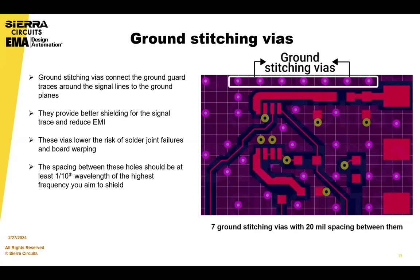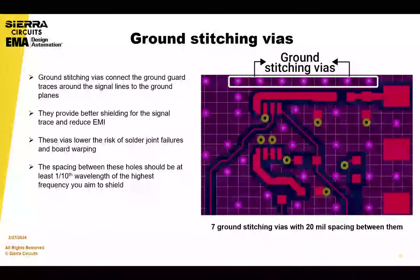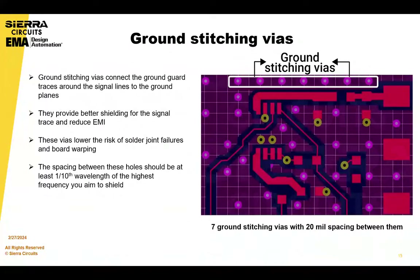Ground stitching vias is one technique. Ground stitching vias connect the ground guard traces around the signal lines to the ground planes, and this provides better shielding for the signal trace and reduces EMI.